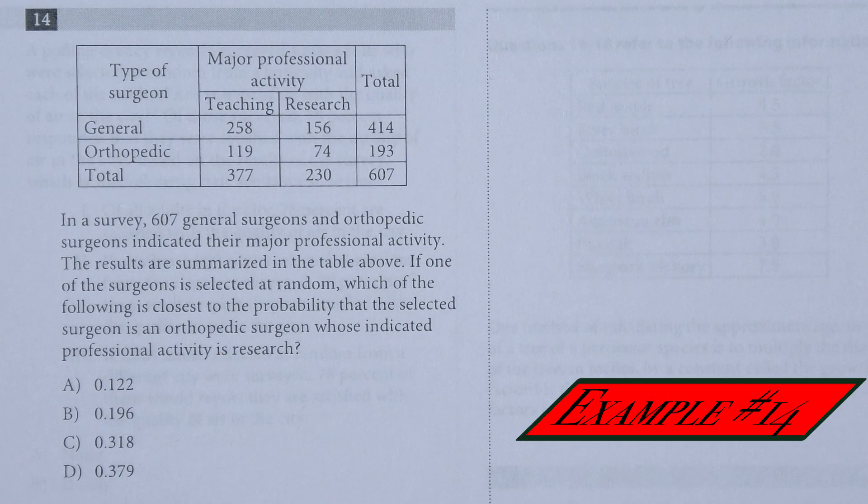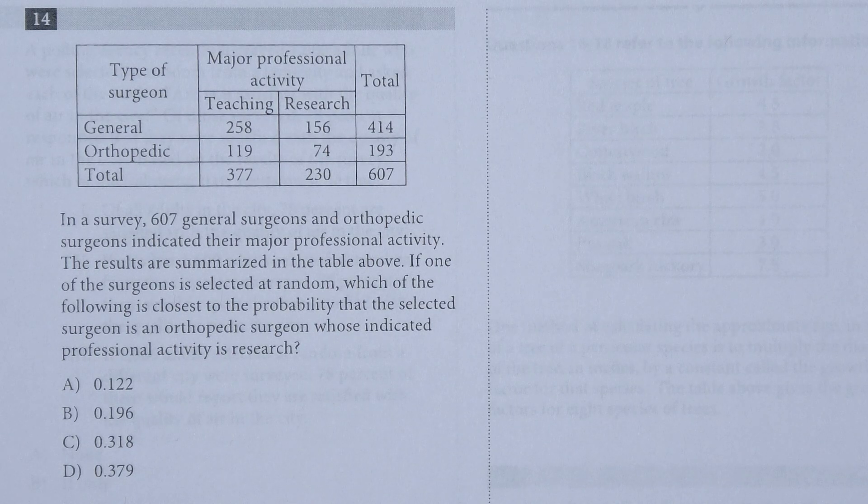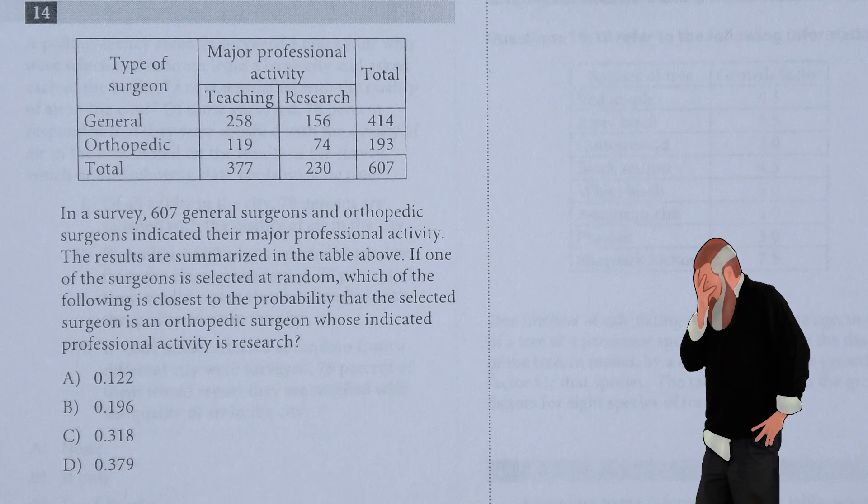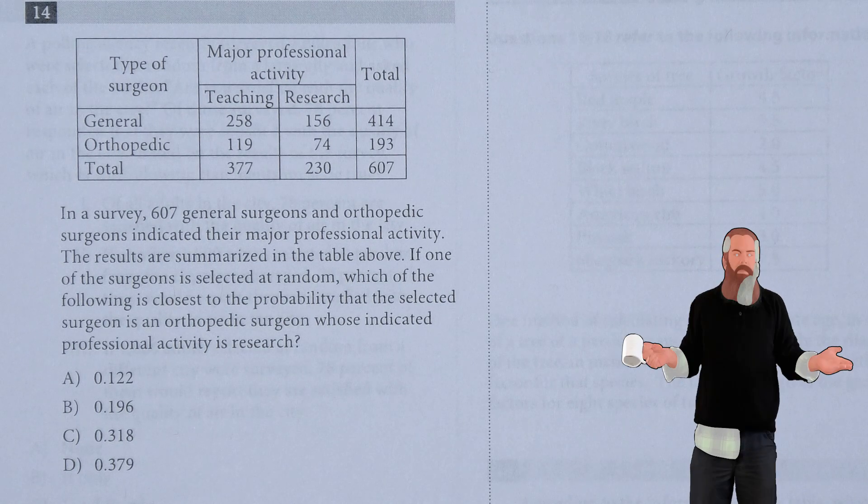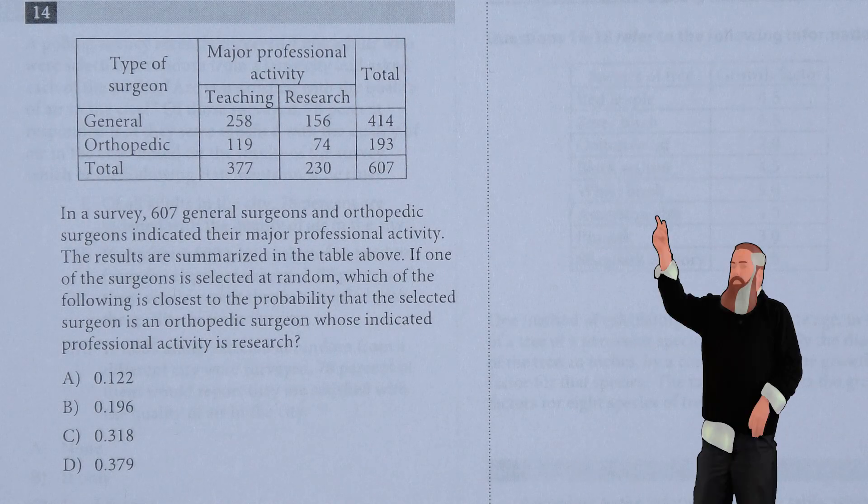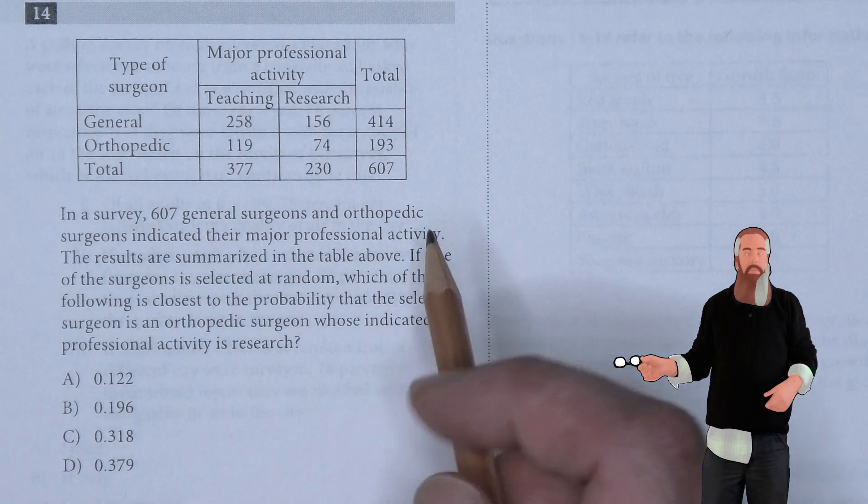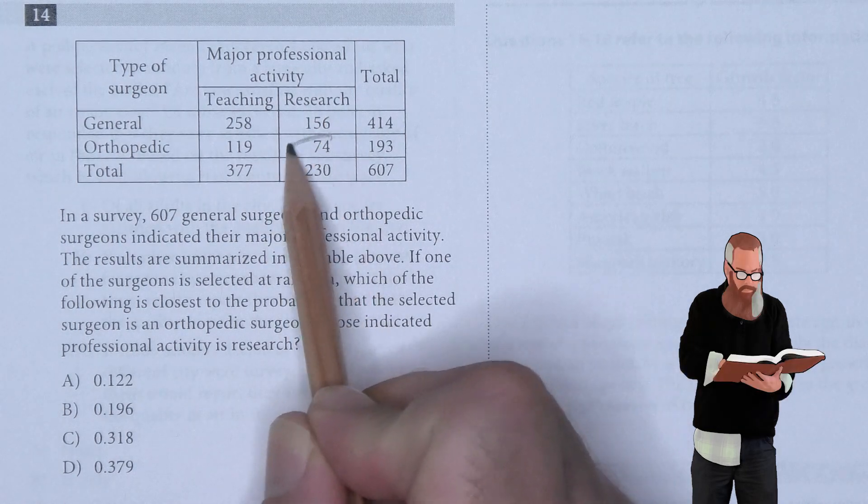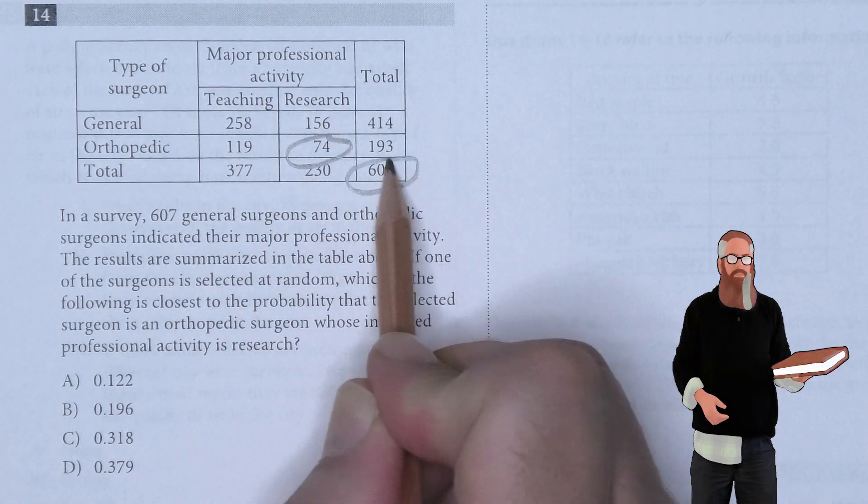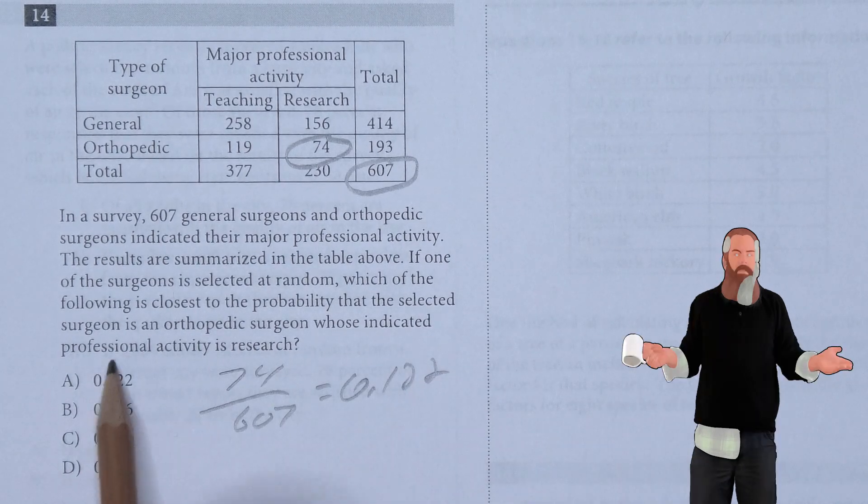In a survey, 607 general surgeons and orthopedic surgeons indicated their major professional activity. The results are summarized in the table above. If one surgeon is selected at random, which is closest to the probability that the selected surgeon is an orthopedic surgeon whose indicated professional activity is research? I need orthopedics that do research, that's 74. Total is 607. So 74 over 607, which is 0.122, and A is the answer.